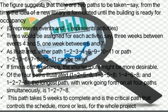O represents events and arrows represent activities. As illustrated, either path 1-2-3-4-5-9-10-11 or path 1-2-3-6-7-8-10-11 can be taken. If time is of the essence, the shorter route might be more desirable.